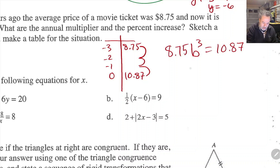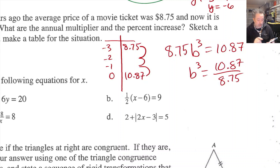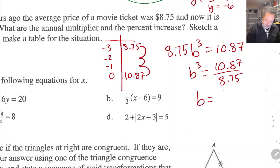To get B to the third alone, B cubed equals $10.87 divided by $8.75. Then if I raise that to the one-third power, it will give me my multiplier. On my calculator, I take 10.87, divide by 8.75, raise that answer to the one-third power, and I get 1.0749. So my multiplier to the nearest tenth is 1.07.